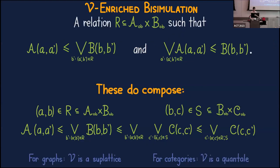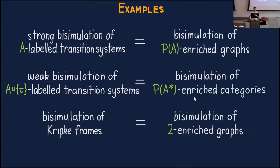So this is the enriched notion of bisimulation, and it turns out that when we define things like this they do compose. You can read through the proof in your own time — I've put it on the slides. We have a notion of enriched bisimulation, and as we've already talked about, strong bisimulations of labeled transition systems are the same thing as bisimulations of power-set-of-A enriched graphs.